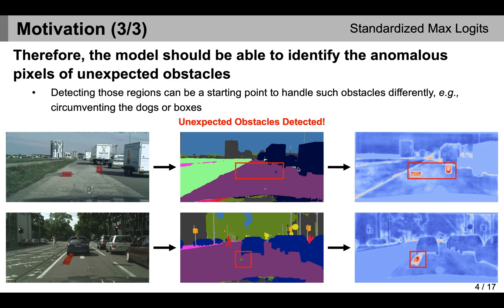In order to handle such an issue, we tried to identify the anomalous pixels of unexpected obstacles, which may work as the starting points of handling such obstacles differently. Back to the previous example, this allows the autonomous vehicle to stop the car or circumvent such obstacles after detecting them.